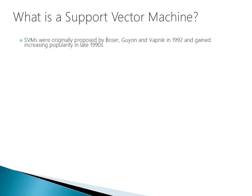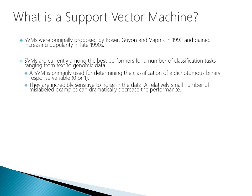What is a Support Vector Machine? Support Vector Machines were originally proposed by Boser, Guyon, and Vatnik in 1992, and they've been gaining increasingly in popularity in the late 1990s. Support Vector Machines are currently among the best performers for a number of classification tests, ranging from text to genomic data. Support Vector Machines are incredibly powerful tools, but it is a black box technology. They are primarily used for determining the classification of a dichotomous binary response variable — we're trying to categorize a zero or a one.